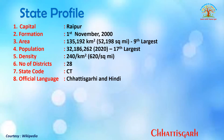The capital of Chhattisgarh is Raipur. It was formed on 1st November 2000. Its area is 135,192 square kilometers, making it the 9th largest state. The population is 3 crore 21 lakh 86,262 as per 2020 survey, ranking 17th largest. Its density is 240 per square kilometer. The number of districts is 28. The state code is CT and the official languages are Chhattisgarhi and Hindi.